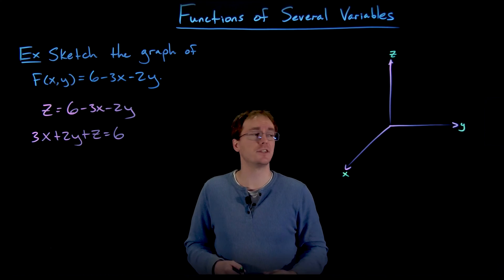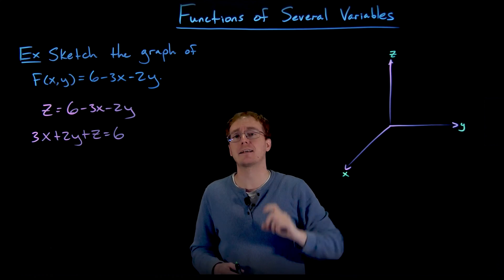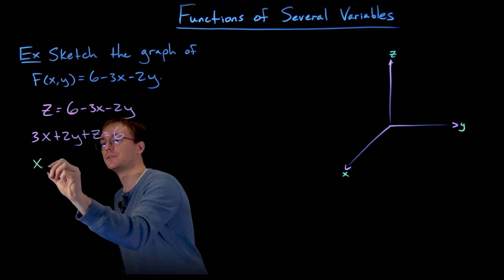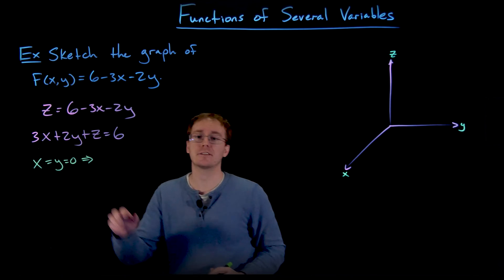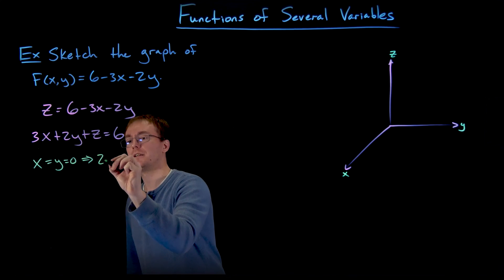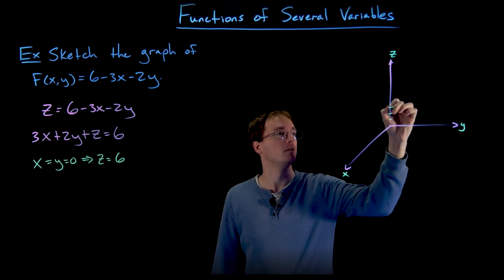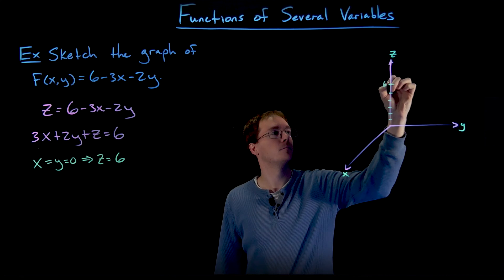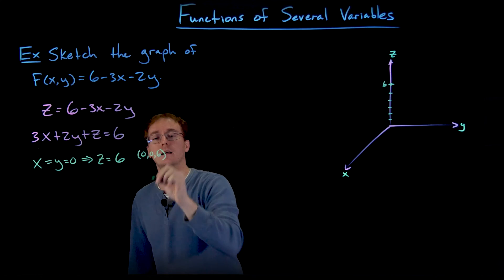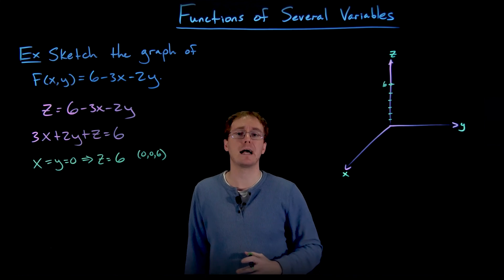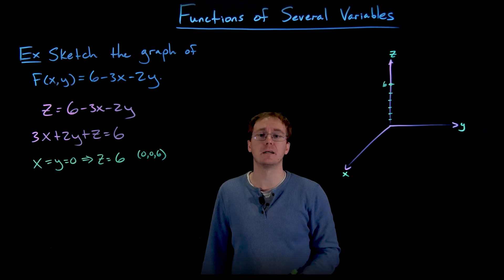Let's start with the z-intercept. If our plane is going to intercept the z-axis, it has to be on the z-axis, which means x and y both equal zero. Setting x and y equal to zero in our equation, we can see that z must equal six. So we have the point (0, 0, 6) on the graph of our plane, which I've gone ahead and plotted on our three-dimensional axes.